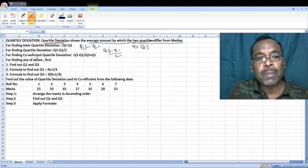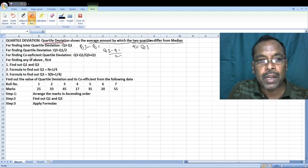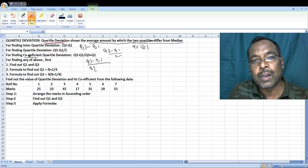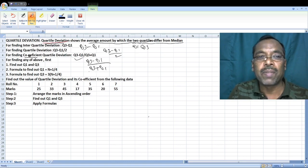For the coefficient of quartile deviation: Q3 minus Q1 divided by Q3 plus Q1.